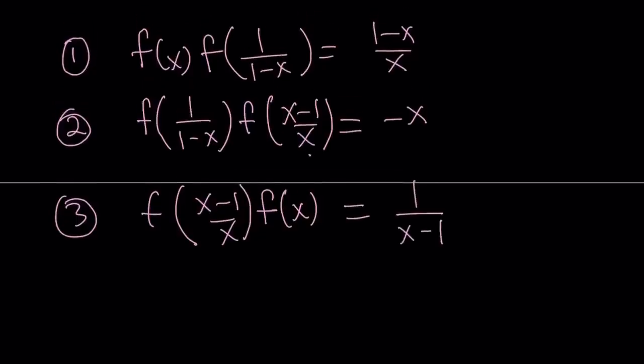Notice that each equation contains a product — a two-way product. If you multiply all three equations together, you get each function squared. It's similar to a system where a·b = k, a·c = m, b·c = l: multiplying gives a²b²c², and then you can square root it. That's the whole idea.